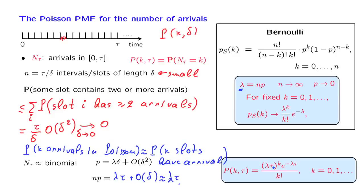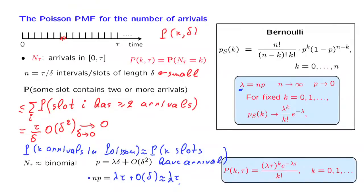To summarize, our strategy was to argue that the Poisson process is increasingly accurately described by a Bernoulli process if we discretize time with a very fine discretization. The approximation becomes exact in the limit when the discretization is very fine. So we took the corresponding binomial formula for the Bernoulli process and took the limit associated with the parameters obtained under a very fine discretization, and this gave us the final formula.